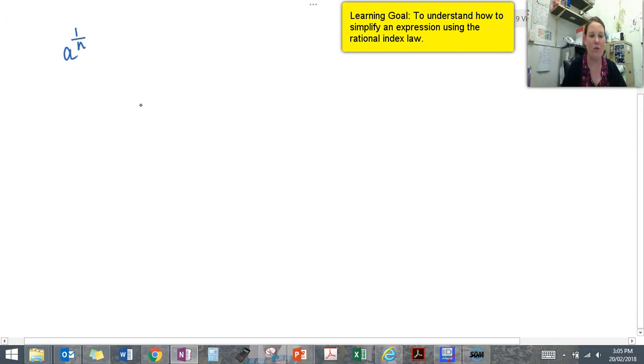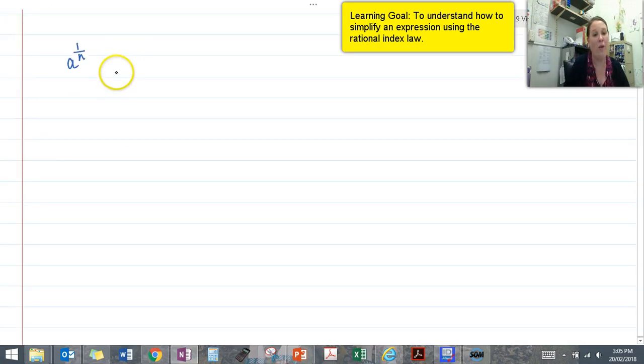Now these are often used to represent roots when we're using them, so a to the 1 over n is the same as writing the nth root of a.